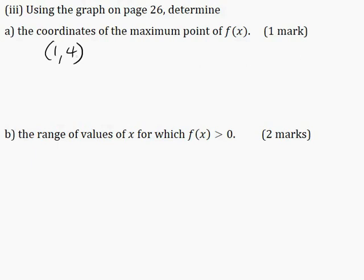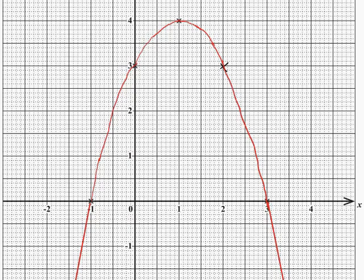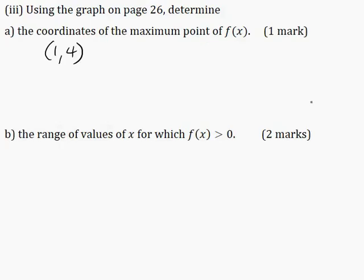Part B: determine the range of values of x for which f(x) > 0 for two marks. On our graph, f(x) is greater than 0 for values of x that are greater than minus 1 but less than 3. So I'll write the inequality: −1 < x < 3.